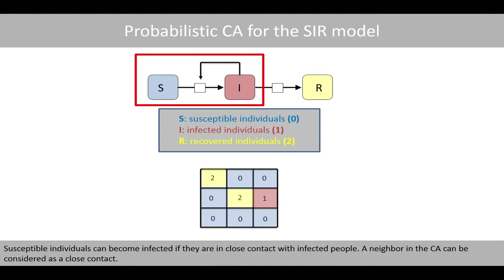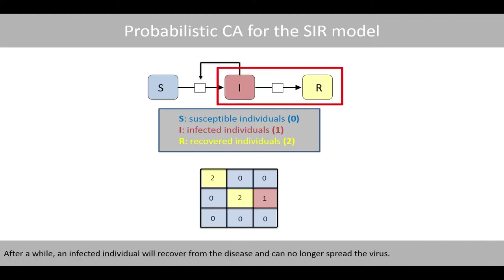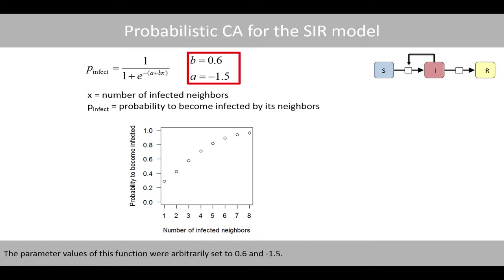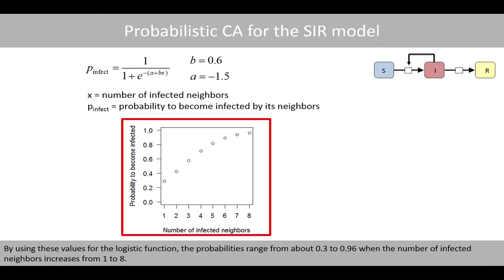Susceptible individuals can become infected if they are in close contact with infected people. A neighbor in the cellular automaton can be considered as a close contact. After a while, an infected individual will recover from the disease and can no longer spread the virus. In this example, I have used a simple logistic function to compute the probability of becoming infected as a function of the number of infected neighbors. The parameter values of this function were arbitrarily set to 0.6 and negative 1.5.